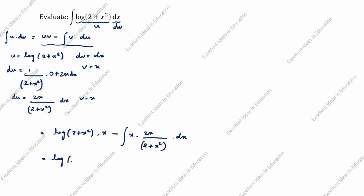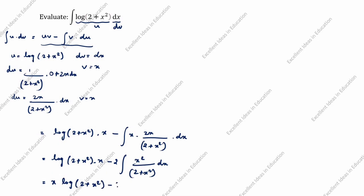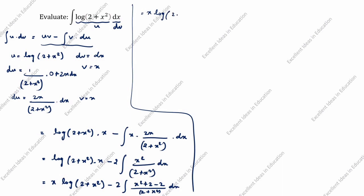Next, equal to x·log(2 + x²) minus — this 2 is constant, we take it outside — integration of x·x which is x² divided by (2 + x²). We add and subtract 2 in the numerator: x² plus 2 minus 2, divided by (2 + x²) into dx. This gives integration of (x² + 2)/(2 + x²) minus integration of 2/(2 + x²) dx.